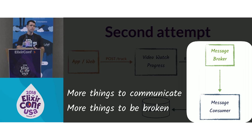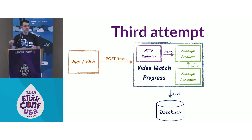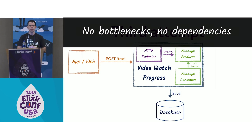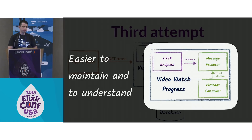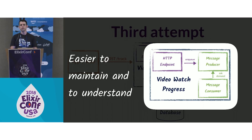The third attempt was to find a solution we could develop in a single unit — no dependency on external services, no directly writing to the database, no bottlenecks and no dependencies. That was the target. The consequences: it's easier to maintain and understand because if you have a simple architecture, you don't have to deal with external things. And I guess that's why Elixir was the best fit for us.